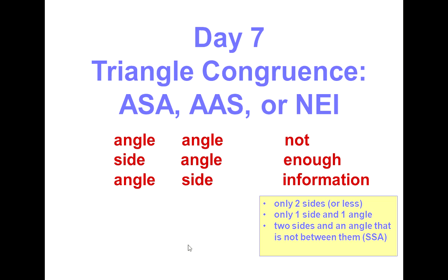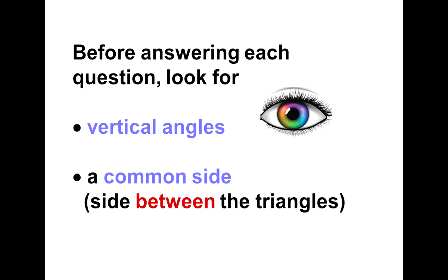Before we come to any conclusion, there are things we need to focus on. We need to look for two things before we finish labeling. One thing is vertical angles — see if there are vertical angles, and if there are, label them. Then see if the triangles share a common side. If they do, label it. The common side is shared between the two triangles.